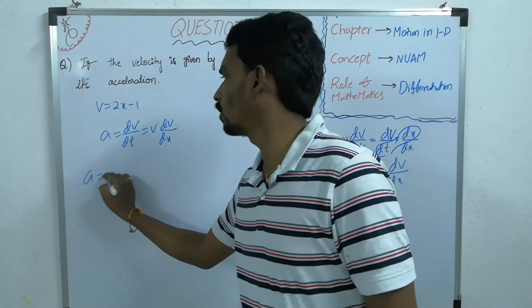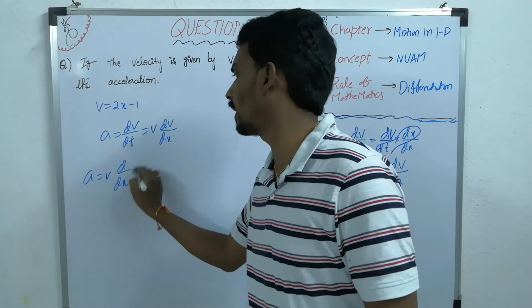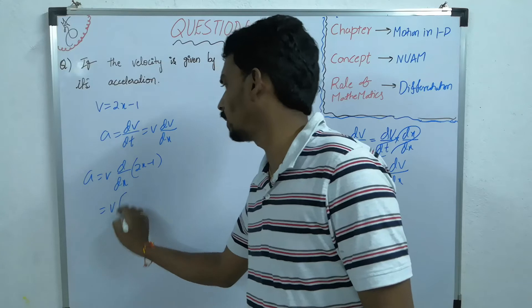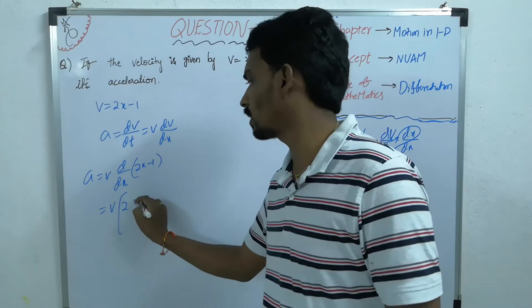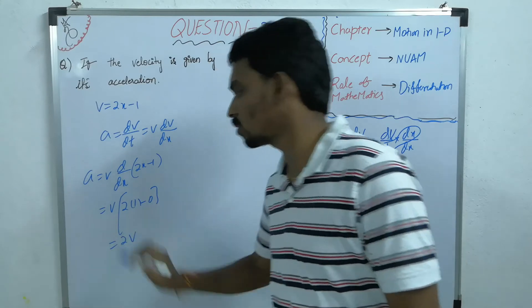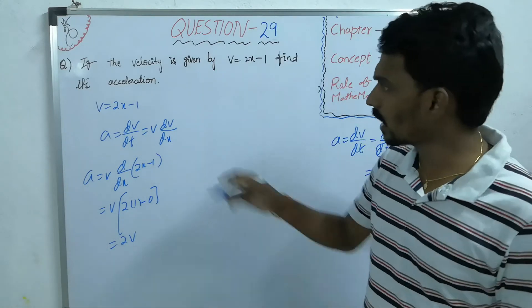So that a equal to v into d by dx of v is 2x minus 1. So, v into differentiation of 2x is 2. Differentiation of 1 is 0. So, the answer is 2v.